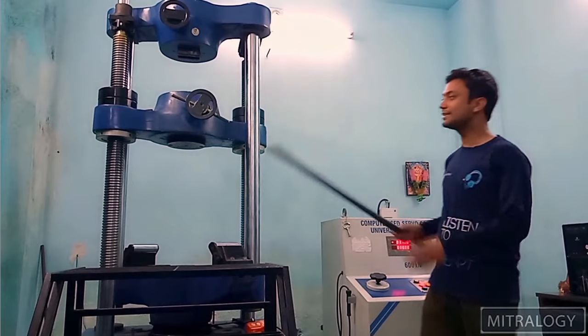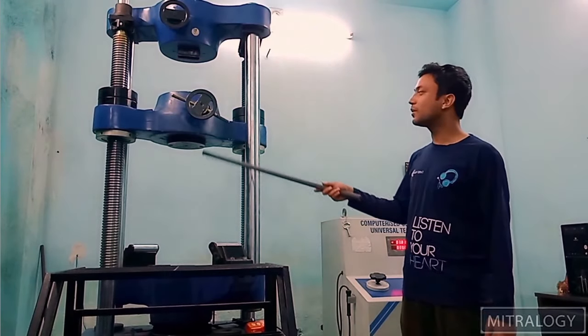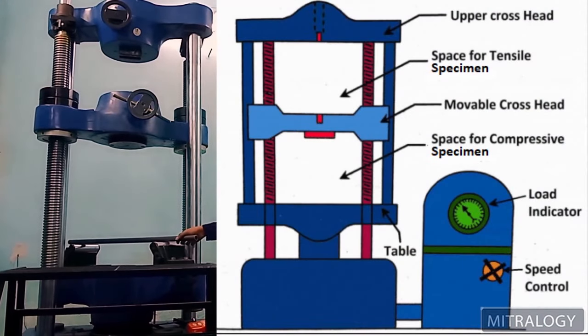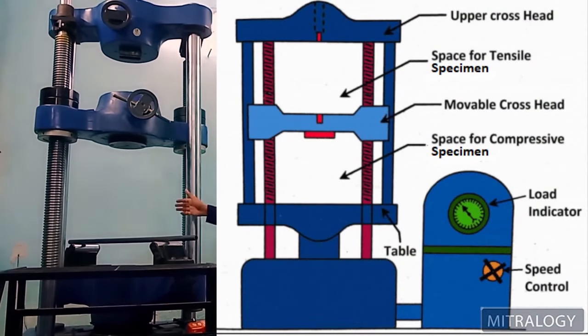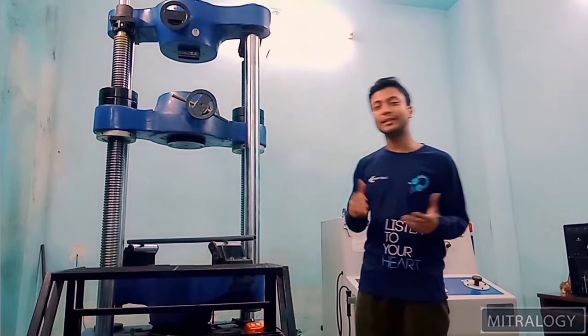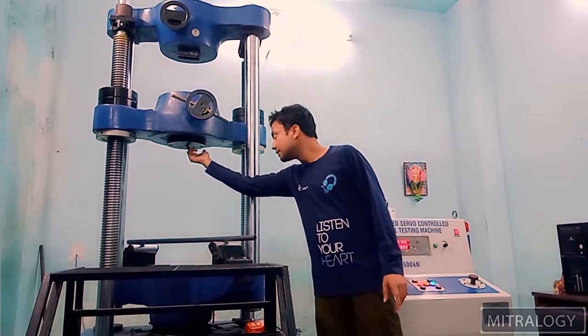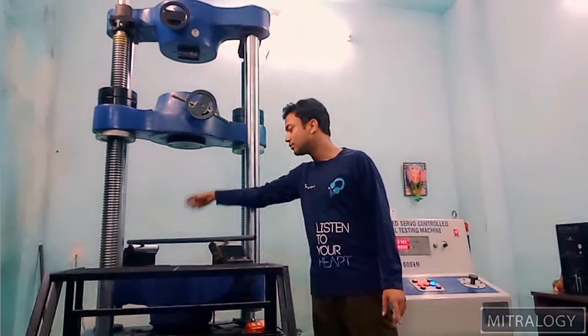And the space in between, this is for compression test. We can keep the sample here and do the compression test. For this we can wear different types of mantles also. We can install the mantles here and do the bent test.